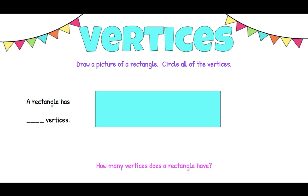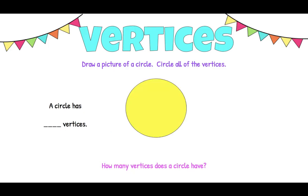Here's a rectangle. If you look at the vertices where two lines meet and come to a point, a rectangle has four vertices. A circle — let's look at all the points on a circle where two straight lines meet. A circle has, you guessed it, zero vertices because there are no points on a circle. It's all round.